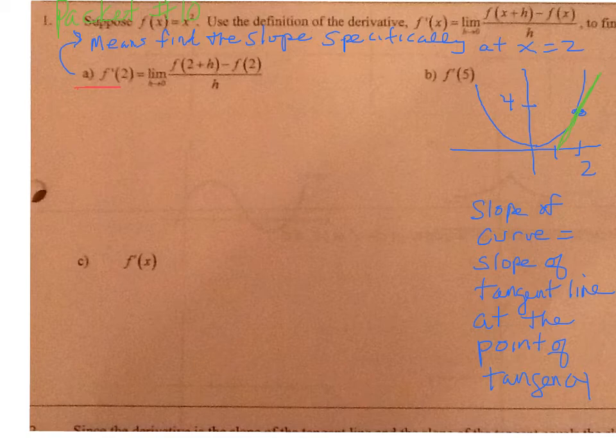Now, the notation is going to be important here. I am going to require that you write down h going to 0 each and every time you do one of these problems on each different line.